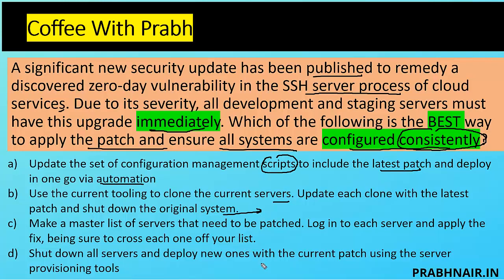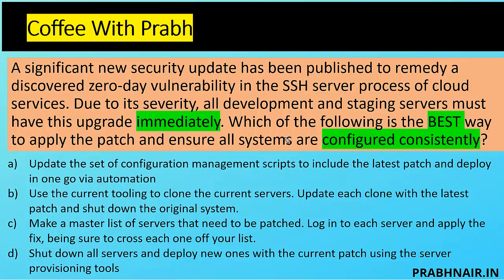Option D: shut down all servers and deploy new ones with the current patch using the server provisioning tool. This will not be a good business decision because it increases cost and downtime. I am deciding between C and A, and I will go with A. Configuration management brings uniformity, and with a single script I can patch all systems in an automated manner, covering more effectively and addressing bugs earlier. Always remember: when it comes to patch management in the cloud environment, we always prefer automation instead of manual, because manual is more prone to human errors. Automation is faster, and with a pre-implanted script we can deploy patches across all systems. That's why the answer is A.